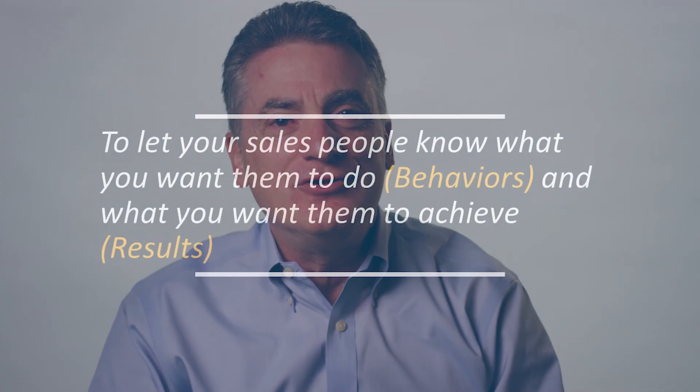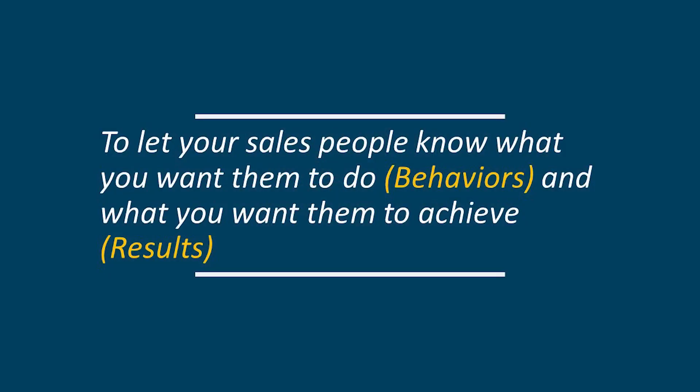Here are some steps you can take to manage underperforming sales reps. One: clarify expectations. The first dynamic is making sure that expectations are clear — that is, do each of your salespeople know what you want them to do, in terms of behaviors, and what you want them to achieve in terms of results?